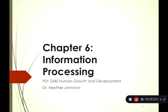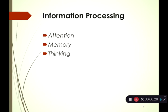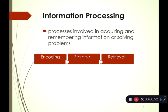Here we are for chapter six: information processing. Information processing is really all cognitive psychology — it's about how we get information from the environment into our minds, how we think about it, and how we use it. The three main topics this lecture will cover are attention, memory, and thinking. A lot of this will be review from introduction to psychology, but I'll be adding in developmental factors.